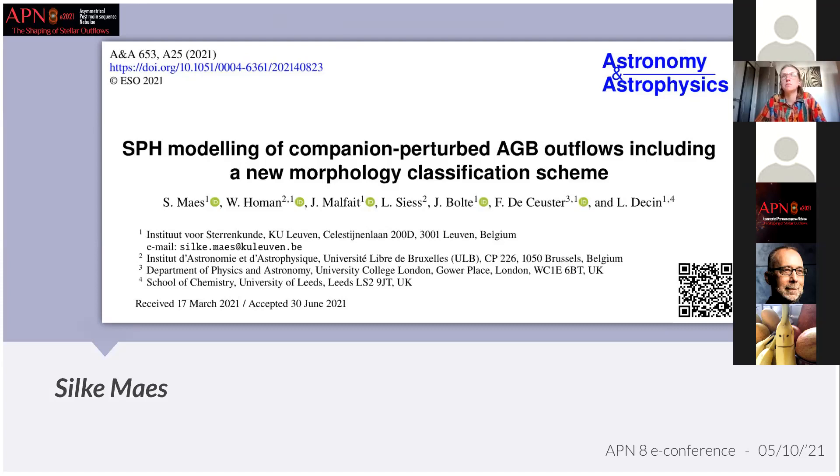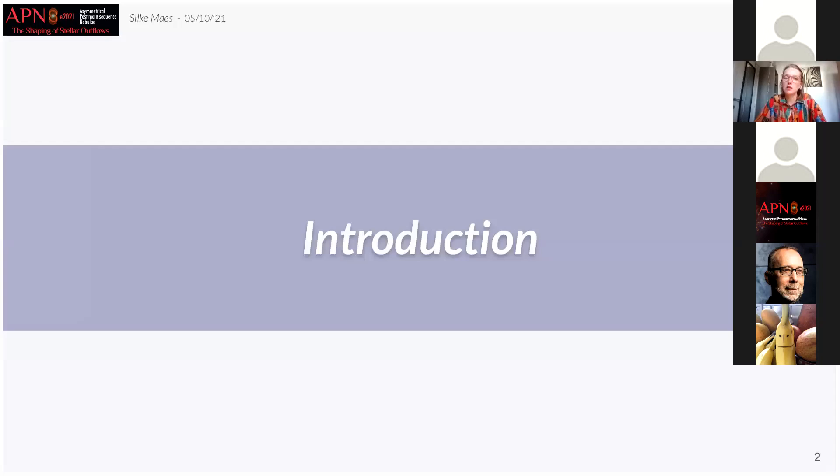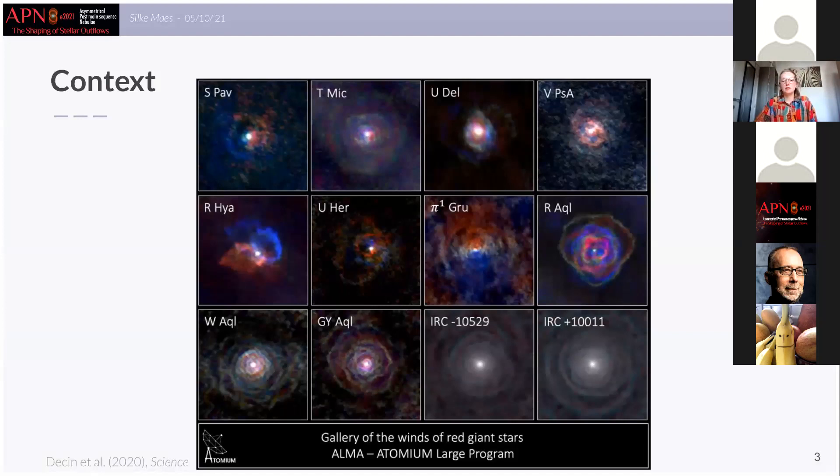So let's start with a brief introduction about the topic. Nowadays we know that HB outflows exhibit a large diversity of structural complexities as you can see for example on this figure which is taken from the Atomium Large Project displaying different HB stars. And as we have seen before in this conference, it is now commonly believed that these morphologies mainly stem from the gravitational interaction between the HB with any stellar or planetary companion which is often undetected.